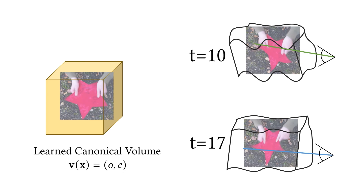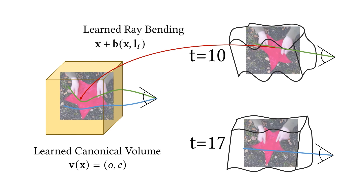But how is it realized in our method? We start with the straight rays. We then have to invert the space warping in order to access the geometry and appearance information in the canonical volume. That means that every sample needs to be mapped back to the canonical volume, thereby bending the ray. We implement this as a ray-bending network that has the power to offset any point along the ray. It is conditioned on a latent code that represents the deformations at a time t and does not receive any explicit supervision.